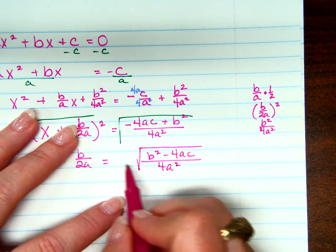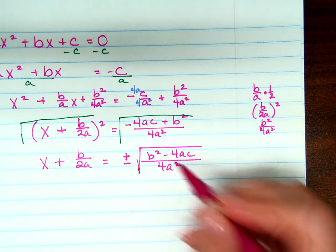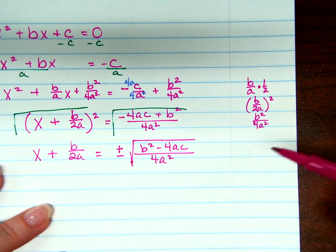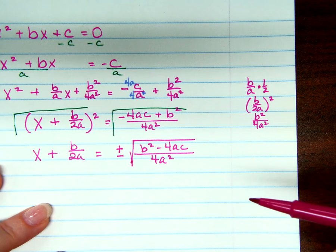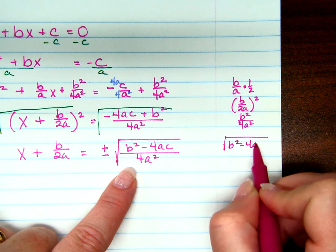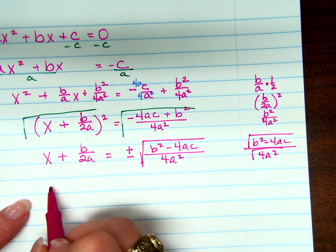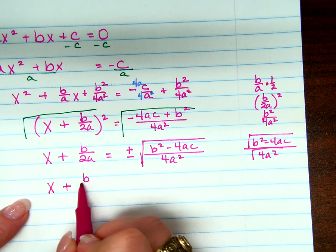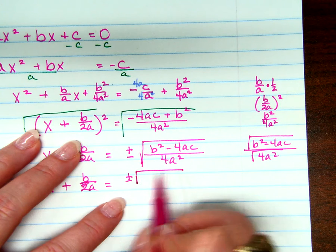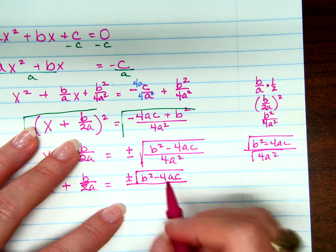I left a space for you so you would remember: plus or minus for sure. I don't like fractions inside of square roots, and you also don't like fractions inside of square roots. So really what we need to do is the square root of b² minus 4ac over the square root of 4a². I'm going to leave this as it was. I have plus or minus still. This is still b² minus 4ac, but what is the square root of 4a²? 2a.